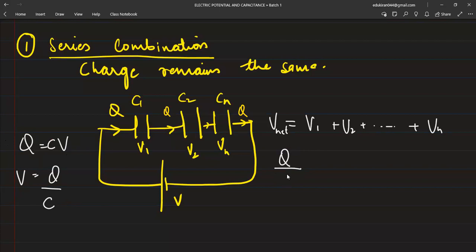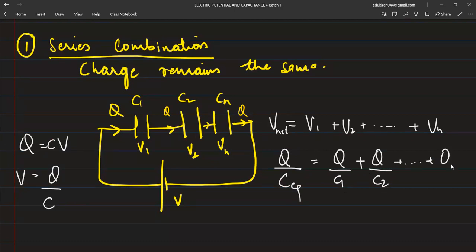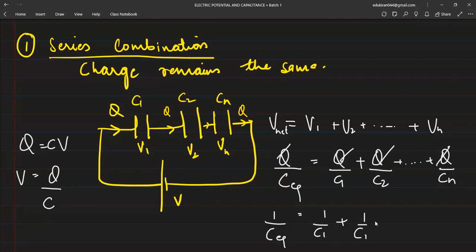So let us put the value. Total charge is the same because it's a series connection, divided by total capacitance. So Q by C_equivalent equals Q by C1 plus Q by C2, up till Q by C_nth. All the values of charge will be cancelled. So 1 by C_equivalent equals 1 by C1 plus 1 by C2 plus 1 by C3 up till 1 by C_nth.